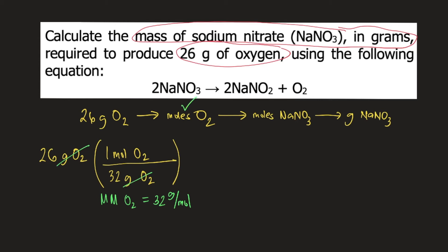Now you have moles of oxygen gas. Now, how do you convert moles of O2 to moles of NaNO3? This is where you use the balanced chemical reaction. Look at the balanced chemical reaction.